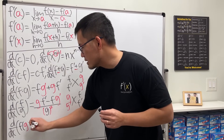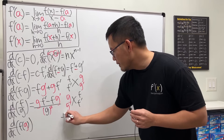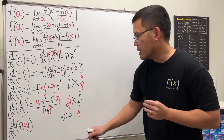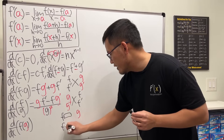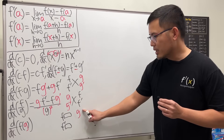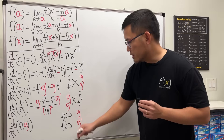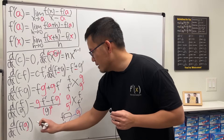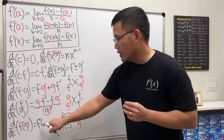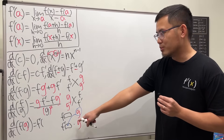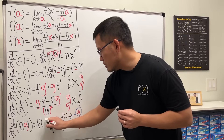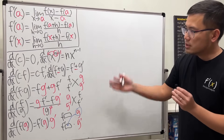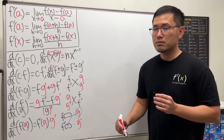Next is everybody's least favorite: the chain rule, which handles a composition of two functions, f of g(x). Think of it as f of a box, where the box contains g(x). Take the derivative of the outer function — f prime of the box — and keep g(x) inside. Then multiply by the derivative of g, which is g prime. In math notation: f prime of g(x) times g prime of x.